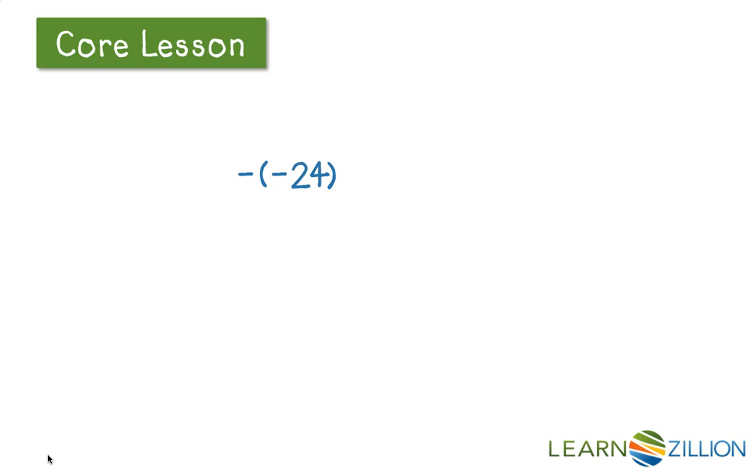In this case, we have two negatives. The negative outside the parentheses, we would refer to that as being the opposite. So we're looking for the opposite of negative 24, which would give us a positive 24. And once again, the opposite of negative 21 would give us positive 21.